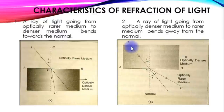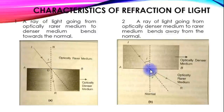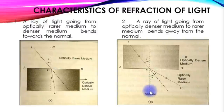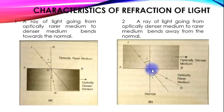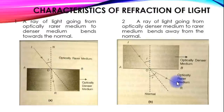The light ray will bend away from the normal when going from a denser medium to a rarer medium. These are the two characteristics of refraction of light.